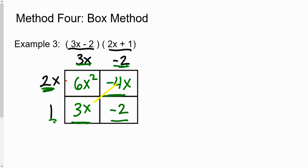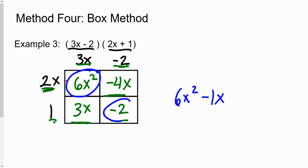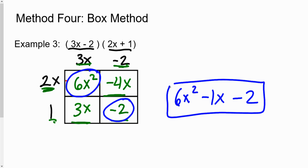When done correctly, the diagonal boxes contain like terms — add them together: 3x minus 4x is negative 1x. The first box gives the first term and the last box gives the last term. That's the box method. So there are four different ways to multiply two binomials — pick the one you like best and focus on practicing and getting good at that one.